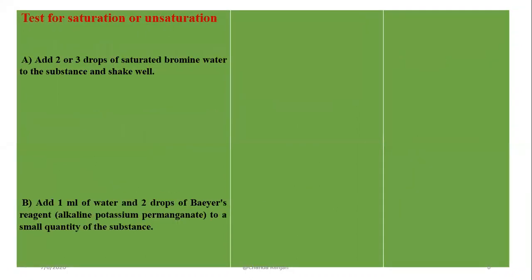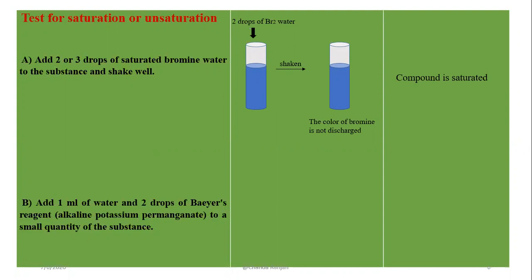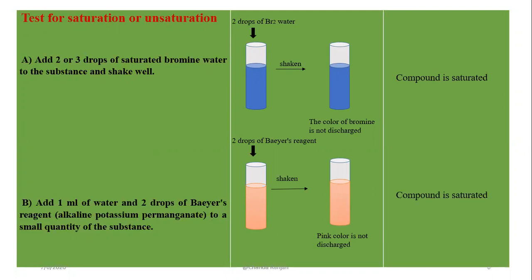Moving to the test for saturation or unsaturation — first we do the bromine water test. We put bromine water and shook it. The color of bromine was not discharged, so the compound is saturated. We also used Baeyer's reagent test: the pink color of potassium permanganate was not discharged, which also means the compound is saturated.